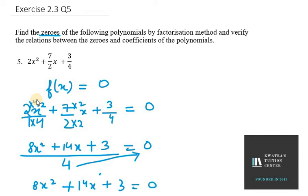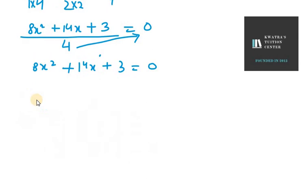This is the equation we need to solve using middle term splitting. Here we are with 8 and 3. 8 and 3 makes 24. Now, we need to split such that they make 14x. So we can write it as 12 and 2. 12 plus 2 makes 14x.